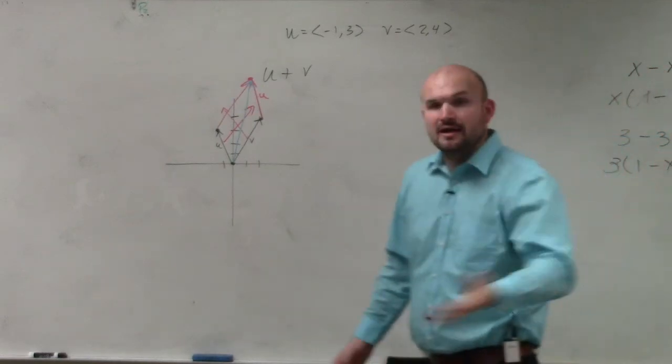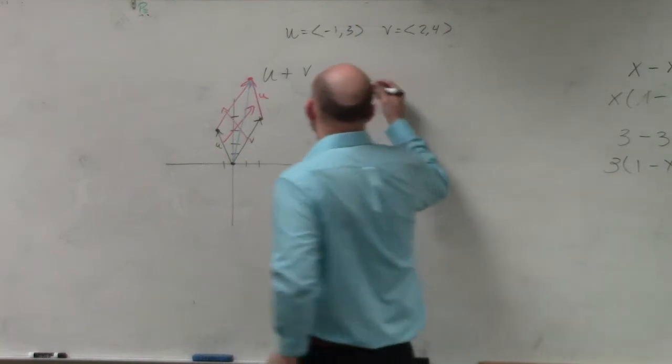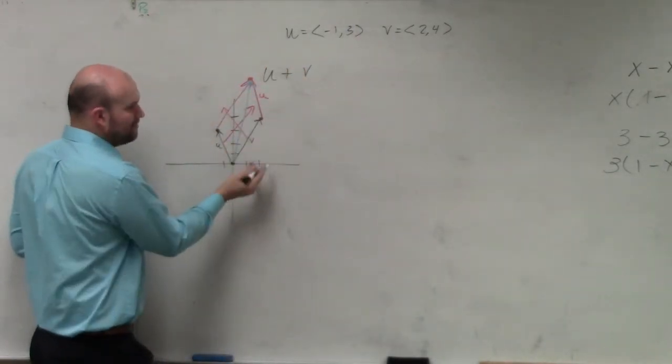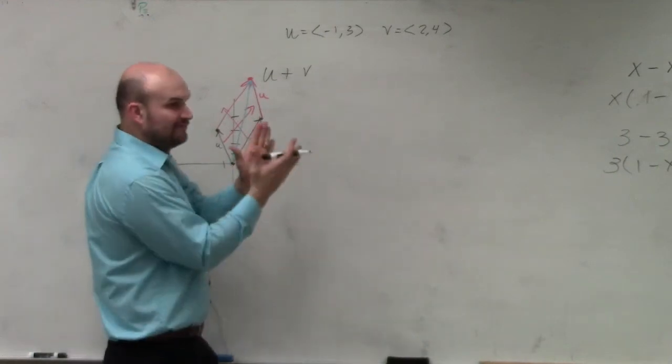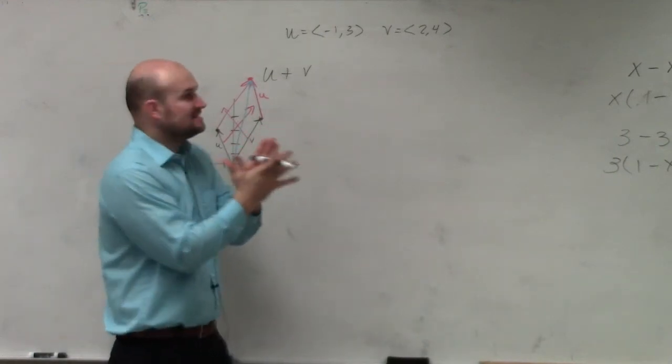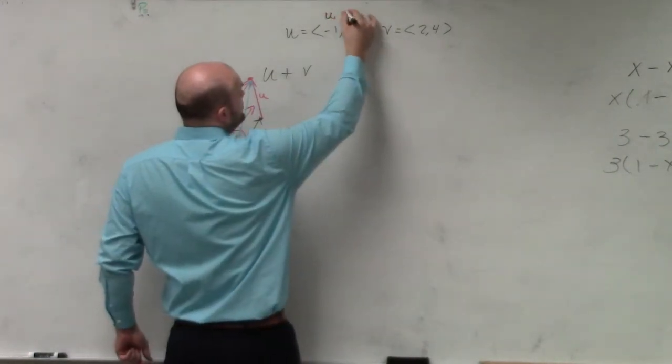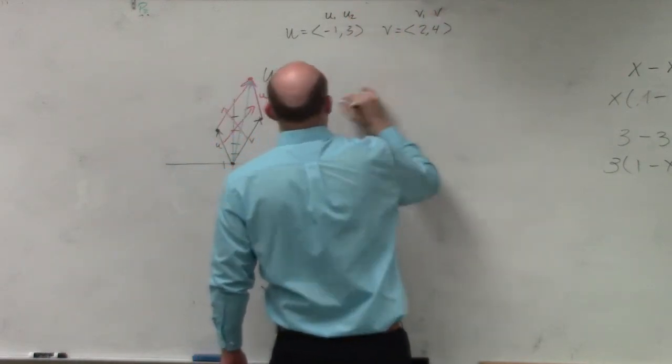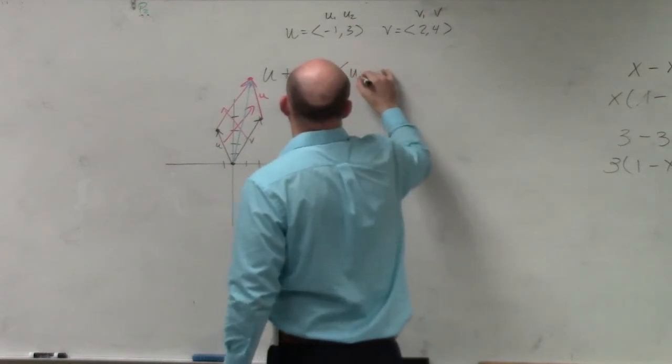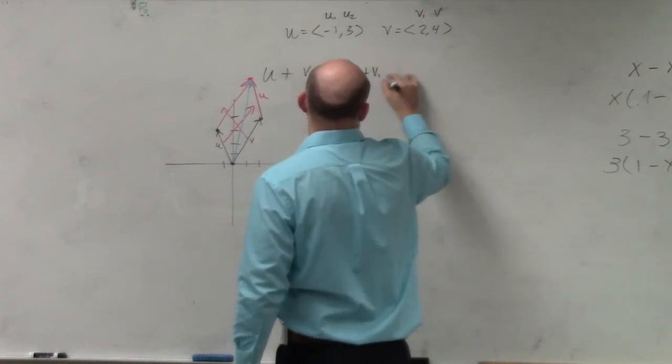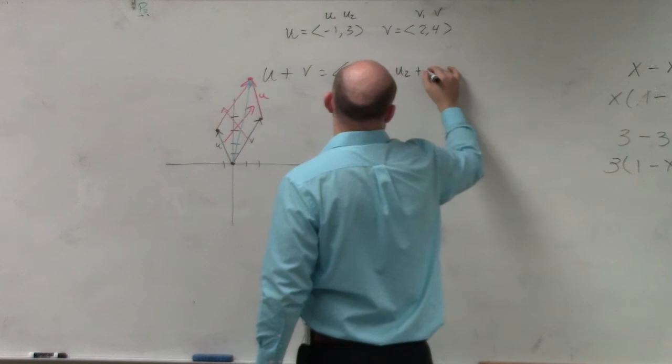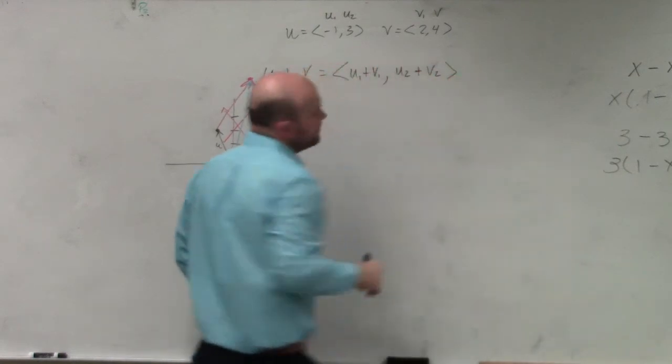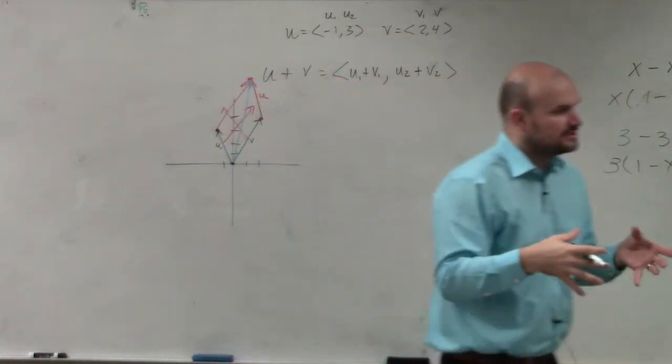Because I might also ask you, hey, why don't you graph the vector or graph the addition, right? So in reality, what are we doing? If you guys look at this, if we're adding these two vectors, we're basically combining the first component and combining the second component. So we'd say here's v1, here's u2, v1, v2.